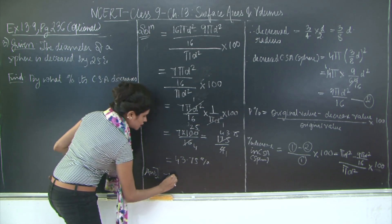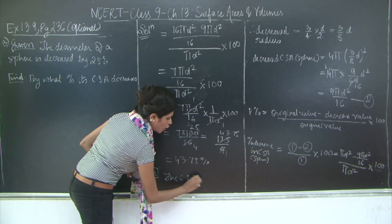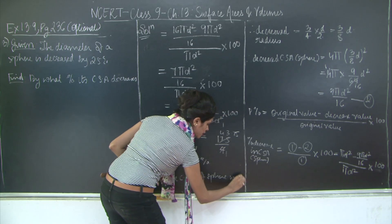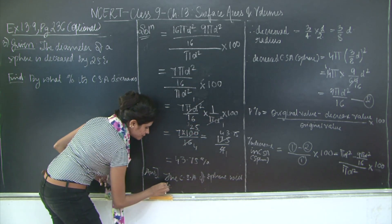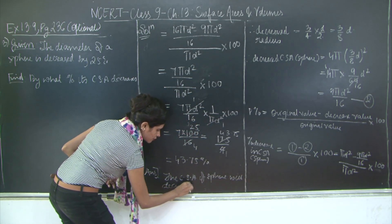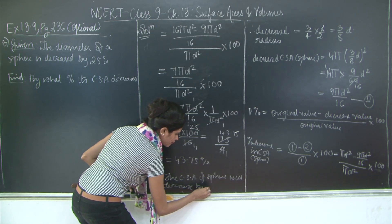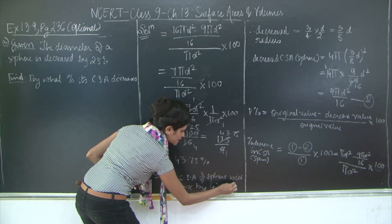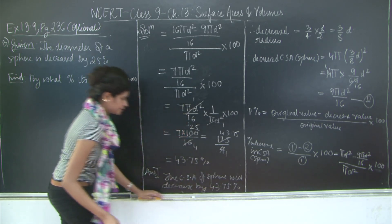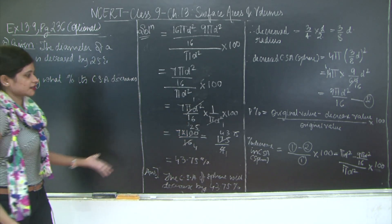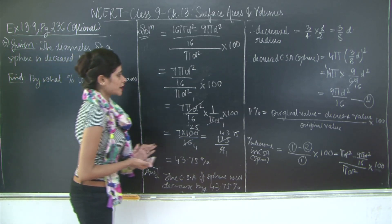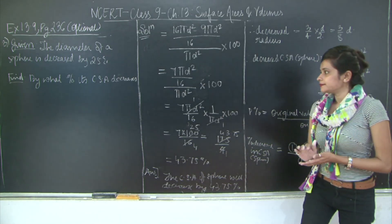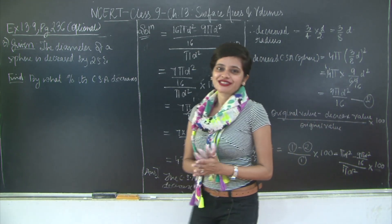So the curved surface area of the sphere will decrease by 43.75%. Please take a look at the solution and the calculation as well. Thank you for watching this video.